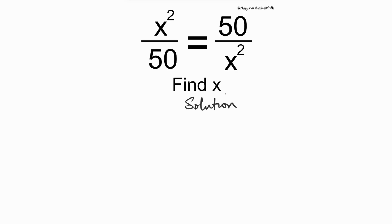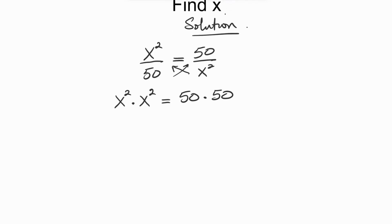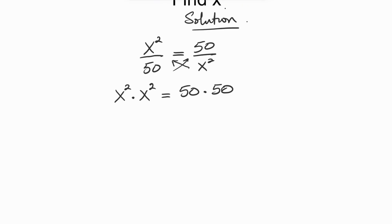Solution. We have that x squared divided by 50 is equal to 50 divided by x squared. The first thing we're going to do is cross multiply — we're going to multiply x squared by x squared and 50 by 50. Now let's rewrite what we have. We have the same base on the left-hand side, so this becomes x to the power 2 plus 2, and this is equal to 50 raised to power 1.